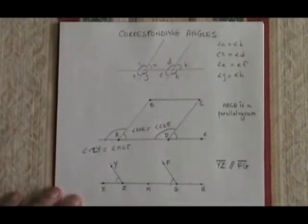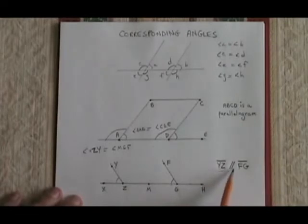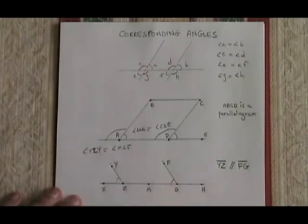How do I know this is true? Because over here, I have this symbol that says segment YZ is parallel to segment FG. Since I know that they are parallel and they cross the same line, it means that they are creating more than one set of corresponding angles.